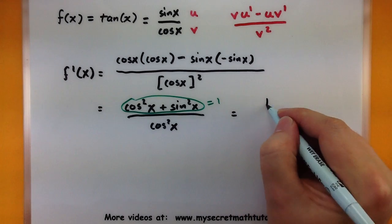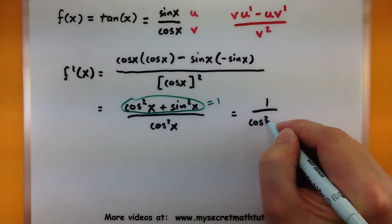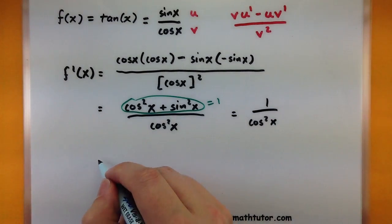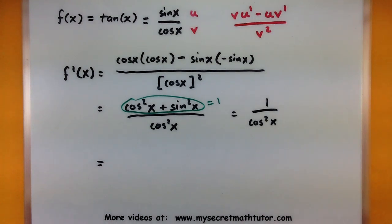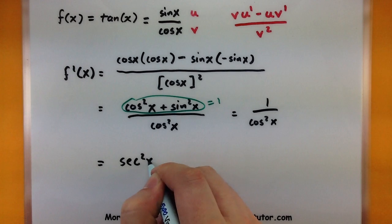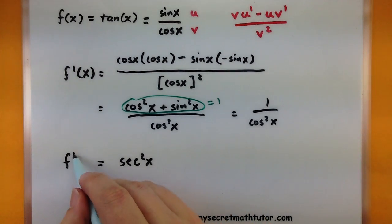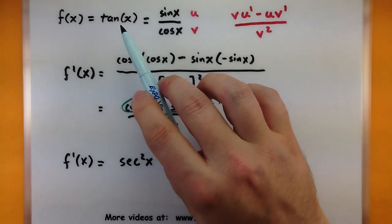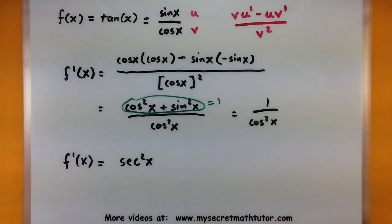So this will reduce to one all over cosine squared of x. And we can rewrite this one as well and call it secant squared of x. So how cool is that? We started with our tangent function and we were able to find its derivative secant squared just by knowing the derivative of sine and cosine. So try to remember those two rules as much as possible. They'll really help you out with lots of trigonometric derivatives and you'll be just okay.